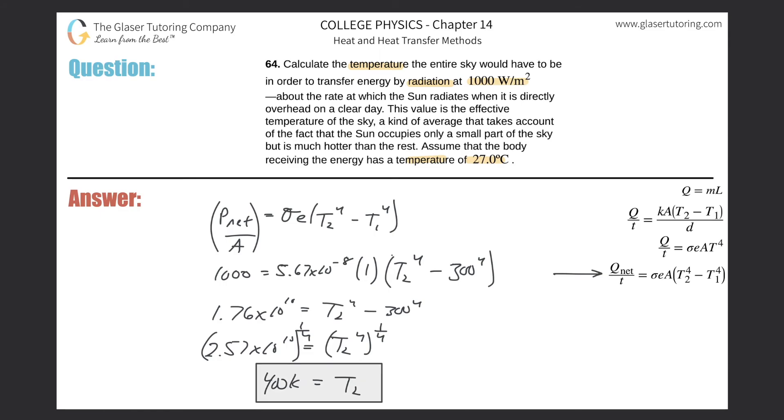This should make sense. If I wanted to convert that into Celsius, just subtract 273 from it, so that's about 128, 128 degrees Celsius. So both of these definitely make sense.